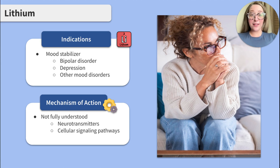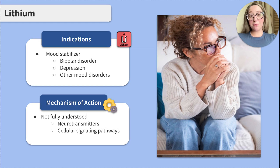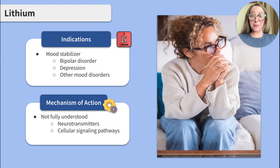Lithium's exact mechanism of action is not completely understood, but it is believed to affect neurotransmitters and cellular signaling pathways. When used to treat bipolar disorder, lithium aids in reducing manic episodes and helps maintain a stable mood over time. When used to treat depression, lithium can help increase the effectiveness of antidepressants in treatment-resistant depression. The mood stabilization benefits lithium provides also make it beneficial in managing schizoaffective and other mood disorders.